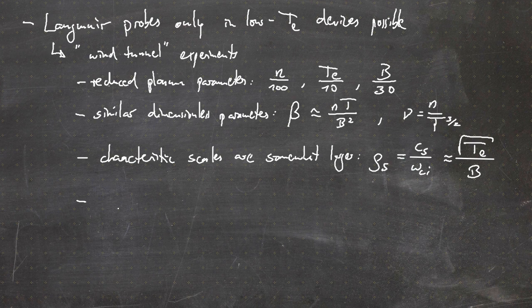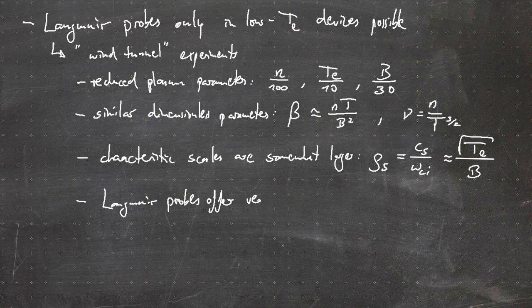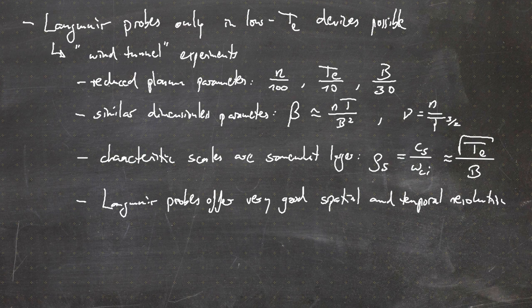The advantage of Langmuir probes is that they offer very good spatial and temporal resolution, which is good from an experimentalist's point of view and also useful for comparing with codes. You can use these tabletop experiments to benchmark your numerical codes, which you can then use to make more solid predictions or descriptions for an actual fusion device.